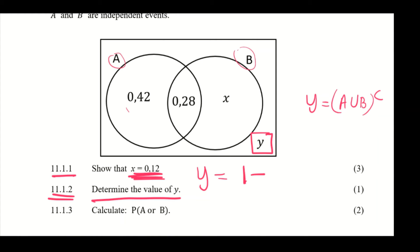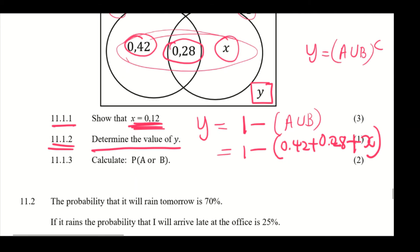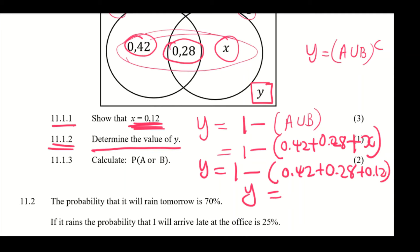To find Y, we calculate 1 minus the union of A and B. Everything inside the Venn diagram is 0.42 plus 0.28 plus X. Since X equals 0.12, we get Y equals 1 minus (0.42 + 0.28 + 0.12), which gives Y equals 0.18.